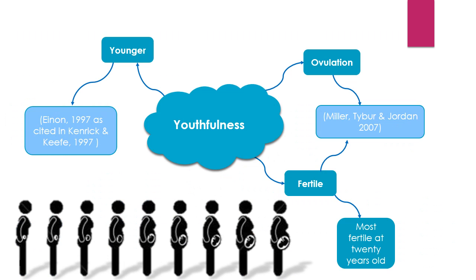The first characteristic is youthfulness. This means that males look for a younger female partner who is fertile, because older females have fewer gametes and therefore are less fertile and less favourable. The Miller et al. study investigates tip earnings by lap dancers in clubs. Eighteen lap dancers recorded their menstrual cycles and tip earnings for 60 days. The girls who were in the fertile stage of their cycle earned almost twice as many tips as those who were not. This suggests that fertility may be seen as important to men, even if they do not realise it.